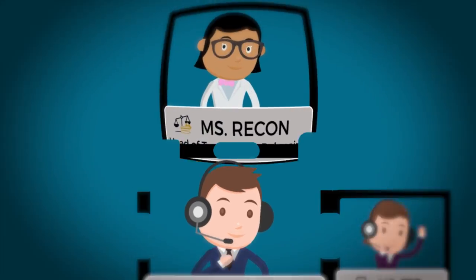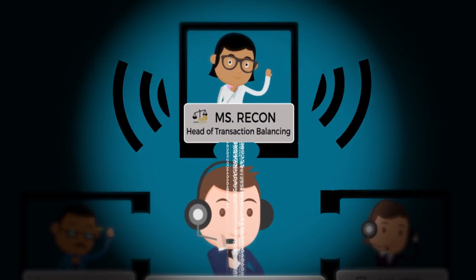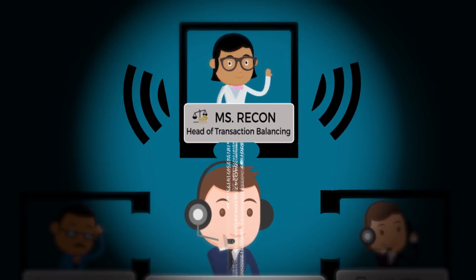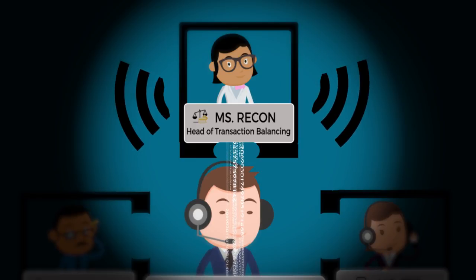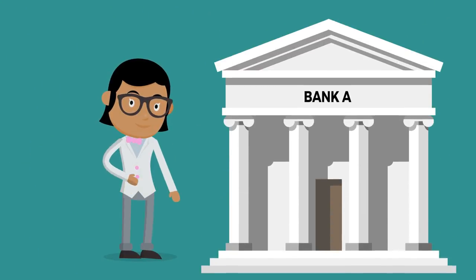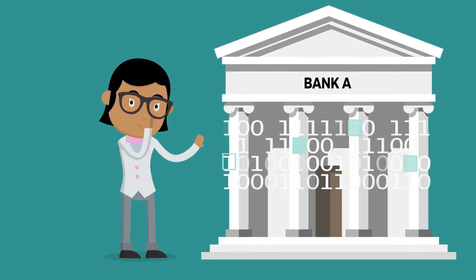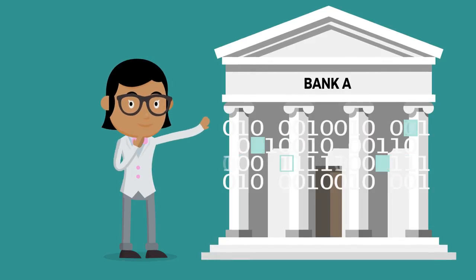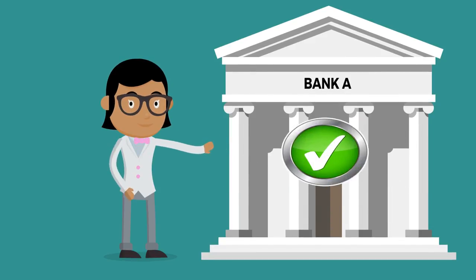Ms. Recon accesses the data made available by Mr. Core and automatically performs the necessary equivalency checks. This validates whether or not the data from Bank A's authorization system and the data from the credit card network are equivalent.